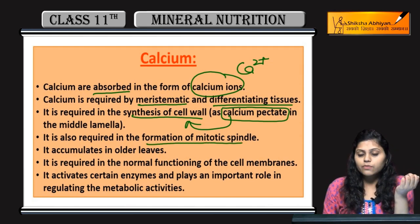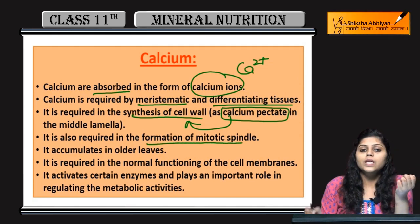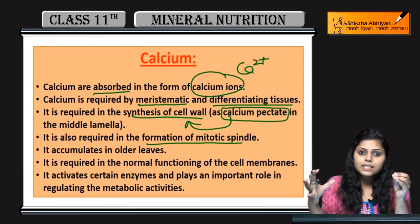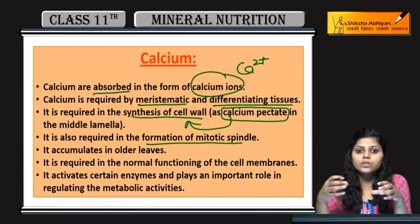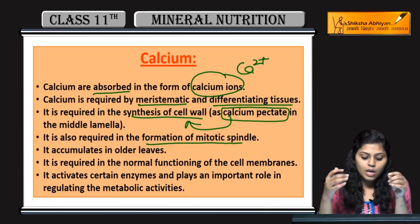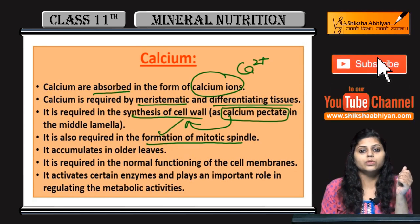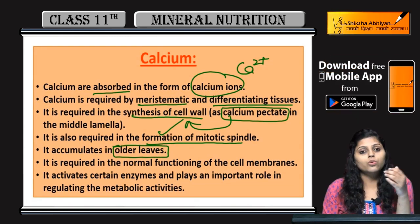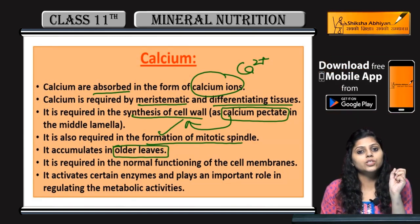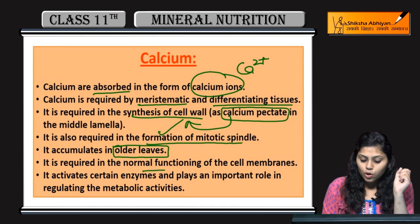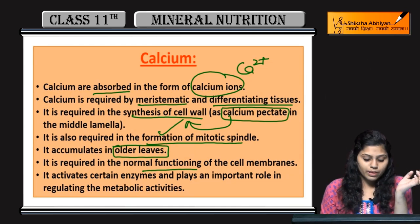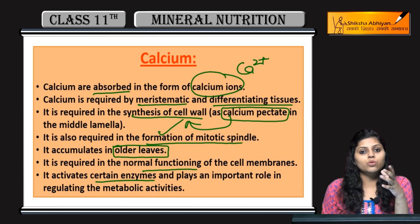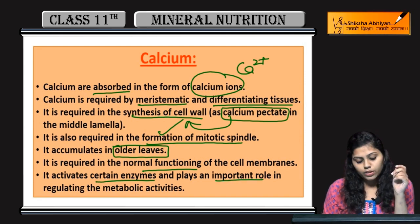Calcium is also required in the formation of the mitotic spindle. When cells divide, mitotic spindles are separated. Calcium ions accumulate in older leaves. They are also required for normal functioning — activating enzymes and playing an important role.